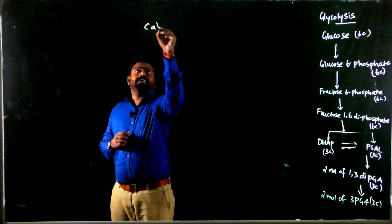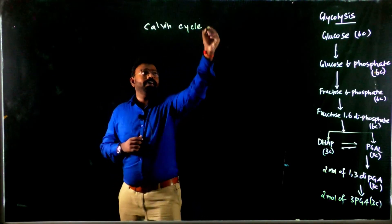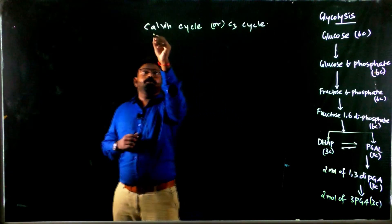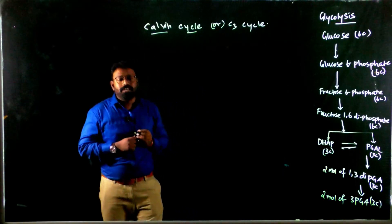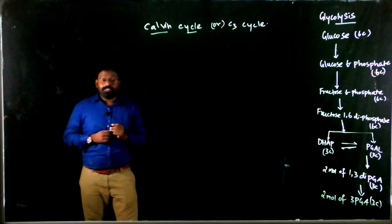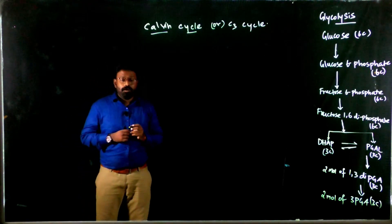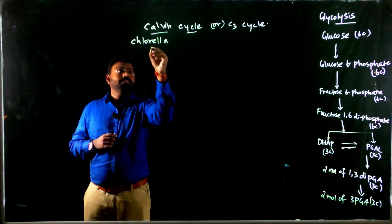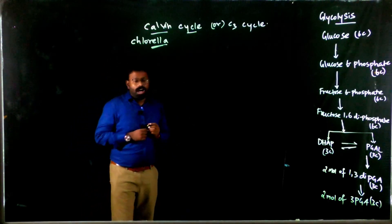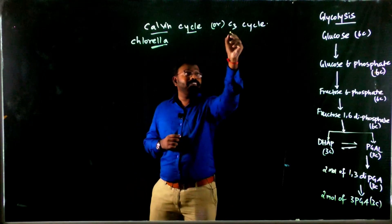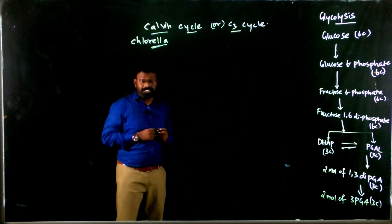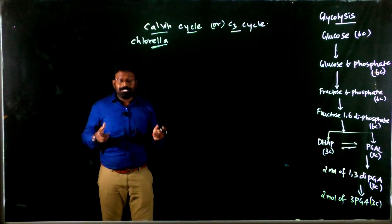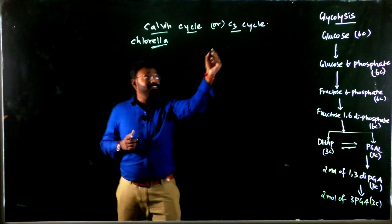Calvin cycle can also be called the C3 cycle. Why did it get the name Calvin cycle? Because Melvin Calvin is the scientist who traced this pathway by working on the species Chlorella. And why is it called the C3 cycle? Because the first stable carbon compound formed is phosphoglyceric acid — a 3-carbon compound.